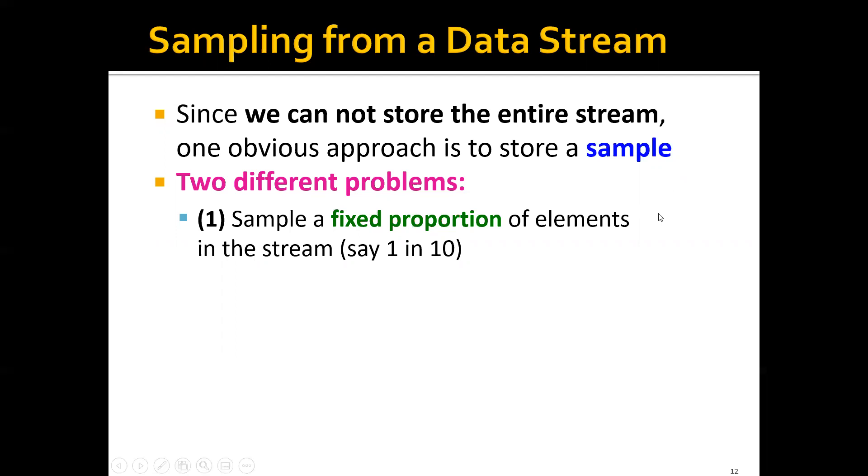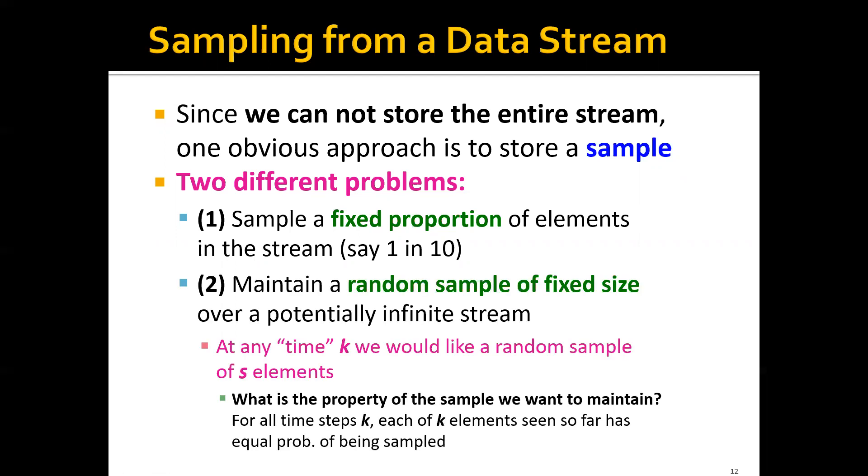In this case, the sample will get larger as the stream grows. The second problem is to maintain a random sample of fixed size over a potentially infinite stream. Formally, at any time k, we would like a random sample of s elements.